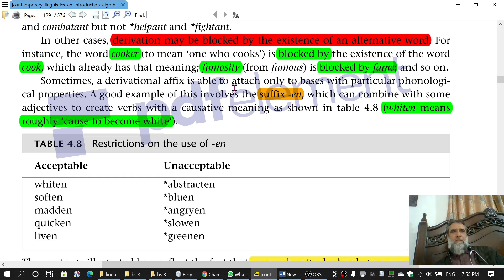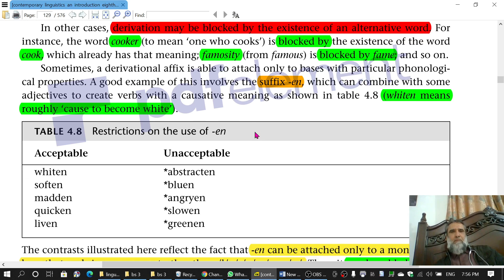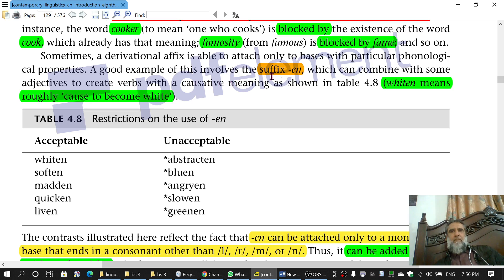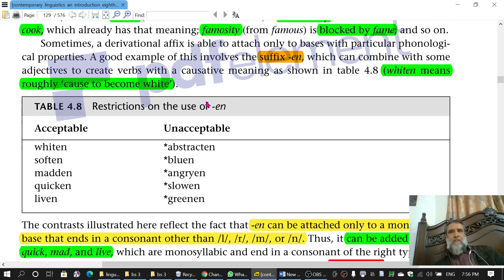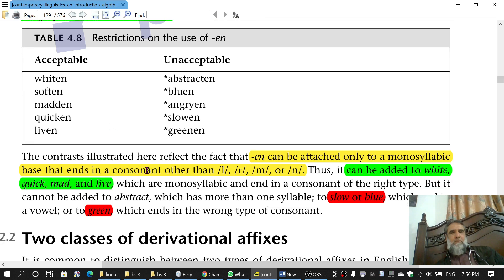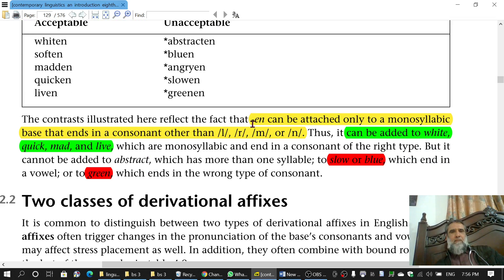Sometimes a derivational affix is able to attach only to basis with particular phonological properties. A good example of this involves the suffix -en which can combine with some adjectives to create verbs with a causative meaning. This means it causes something to happen. The meaning is shown in table 4.8. Whiten means roughly cause to become white. So these phonological properties are the contrasts illustrated here. This reflects the fact that -en can be attached only to monosyllabic base that ends in a consonant other than l, r, m or n.